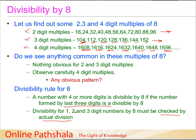That was our discussion on divisibility tests for 4 and 8. To reiterate: for divisibility by 4, the test applies to numbers with three or more digits — if the last two digits form a multiple of 4, the number is divisible by 4. Similarly for 8, the test applies to numbers with four or more digits — if the last three digits are divisible by 8, the entire number is divisible by 8. See you in the next session.